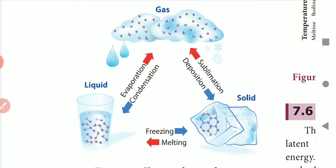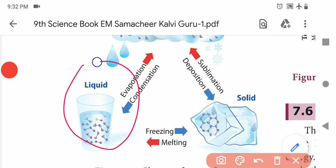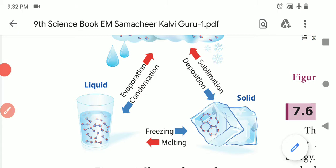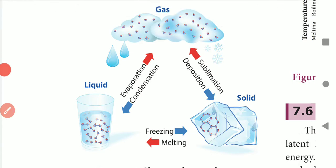Looking at the diagram: first we have a liquid. When a liquid is heated it evaporates and converts to gas.